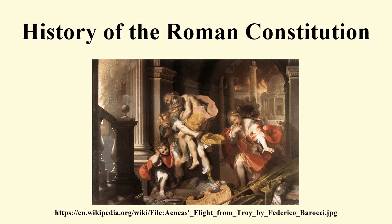In the year 494 BC, the plebeians seceded to the Aventine Hill and demanded of the patricians the right to elect their own officials. The patricians capitulated, and the plebeians ended their secession. The plebeians called these new officials plebeian tribunes, and gave these tribunes two assistants called plebeian aediles. In 449 BC, the senate promulgated the Twelve Tables as the centerpiece of the Roman constitution. In 443 BC, the office of censor was created, and in 367 BC, plebeians were allowed to stand for the consulship. The opening of the consulship to the plebeian class implicitly opened both the censorship as well as the dictatorship to plebeians.